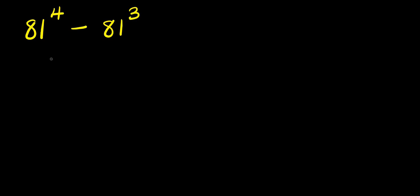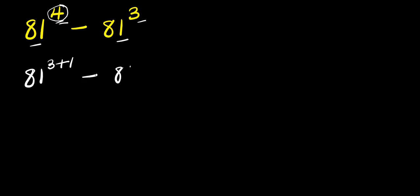How to evaluate eighty-one to the power four minus eighty-one to the power three. We are going to express this four as a summation of three and one, so we have eighty-one to the power three plus one, which is the same thing as eighty-one to the power four minus eighty-one to the power three.